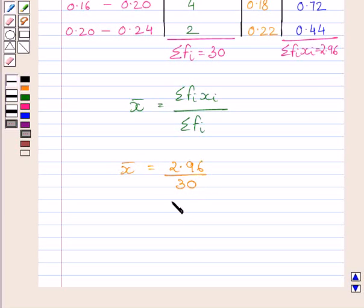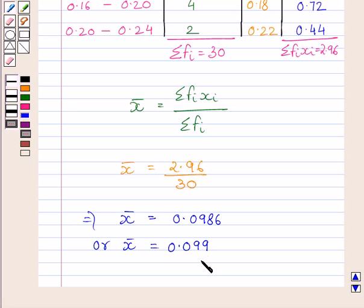Now, simplifying further, we get mean is equal to 0.0986. Rounding off this value up to three places of decimal, we get mean is equal to 0.099.